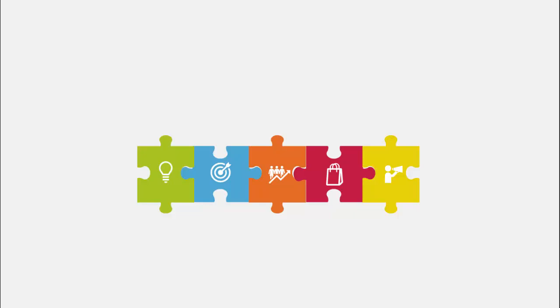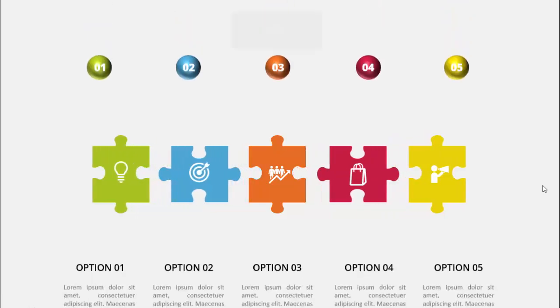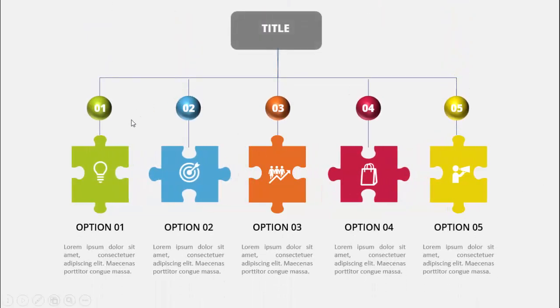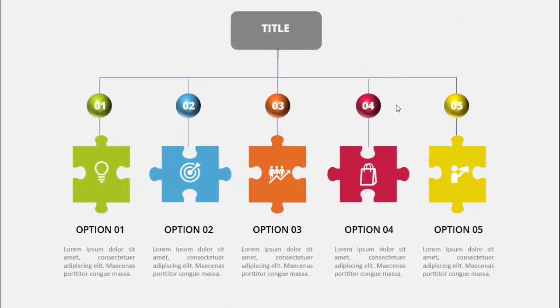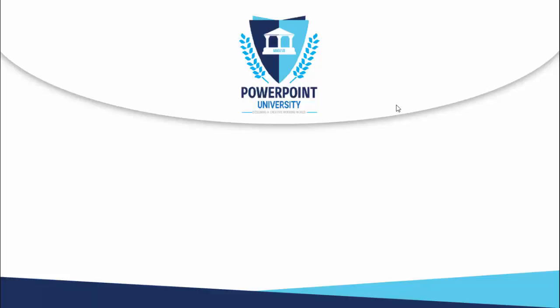In today's tutorial I'm going to show you how to create a five-option jigsaw puzzle slide in PowerPoint. I have created this five-option jigsaw puzzle with a different color combination and with icons. When I click it, it moves apart, and then you can put option number one and the title at the top.